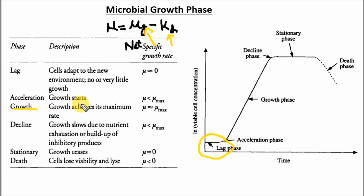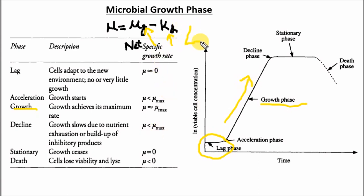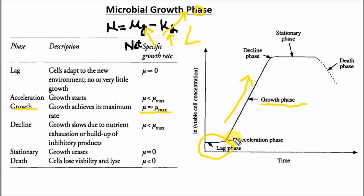In the growth phase or exponential phase, when cells start increasing their number exponentially, kd is less than μg, so μ is greater than zero. It tends to maximum when kd is equal to zero — when kd equals zero, μ tends to its maximum value.